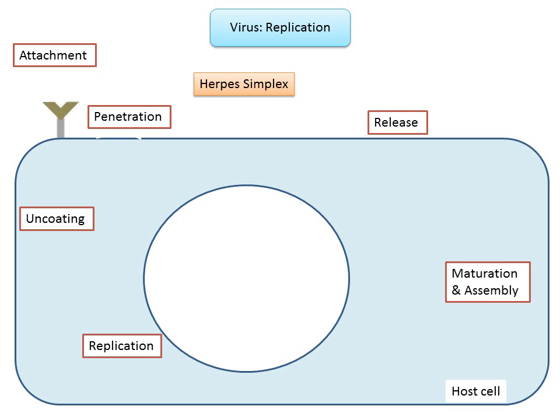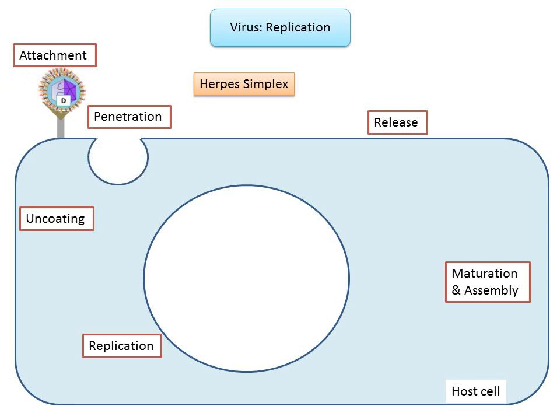Viral proteins on the capsid or phospholipid envelope interact with specific receptors on the host cell surface. This specificity determines the host range or tropism of a virus. The virus attaches to these receptors, following which penetration occurs. Attachment to a specific receptor can induce conformational changes in viral capsid proteins or the lipid envelope, resulting in fusion of viral and cellular membranes.